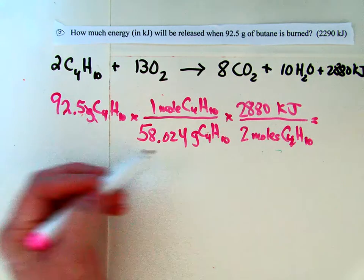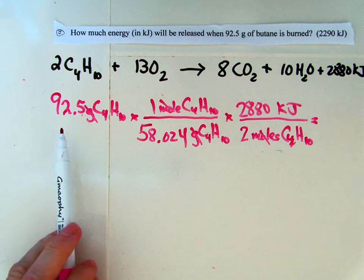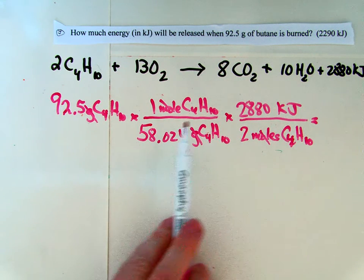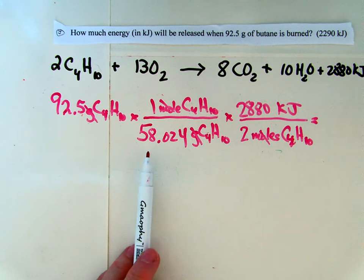Let's check our units. Grams cancel out. Moles cancel out. And we're left with kilojoules, which is what we want to have in our problem. So if you take 92.5 times 1 times 2,880, divide it by 58.024,